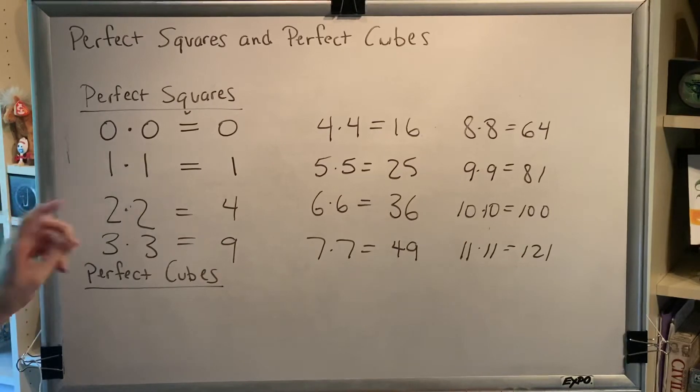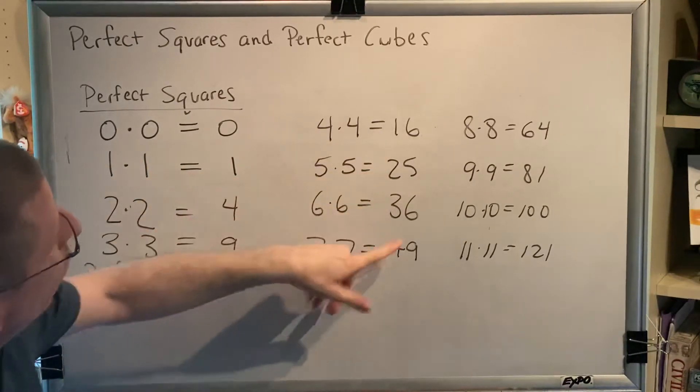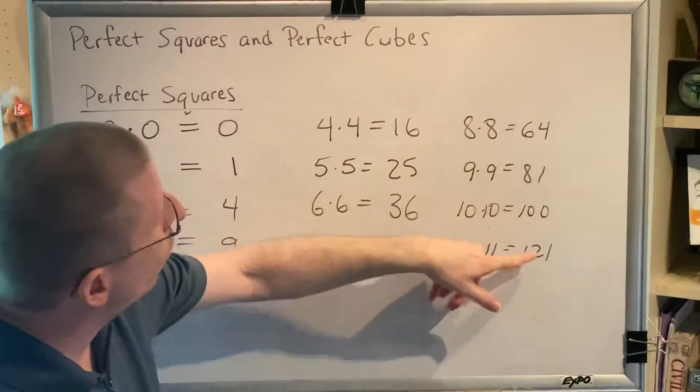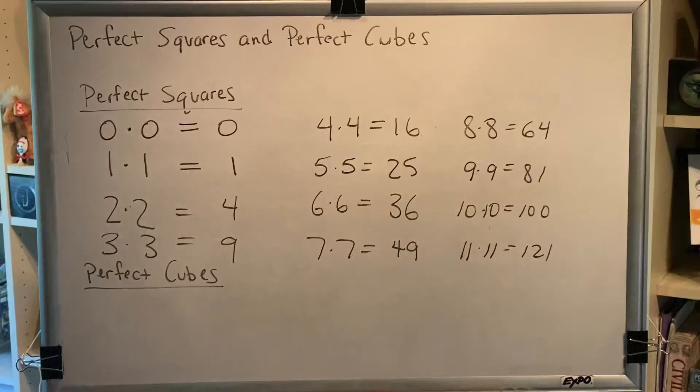These numbers are all perfect squares: zero, one, four, nine, sixteen, twenty-five, thirty-six, forty-nine, sixty-four, eighty-one, one hundred, one hundred twenty-one. They are all the result of taking some other number and multiplying it by itself.